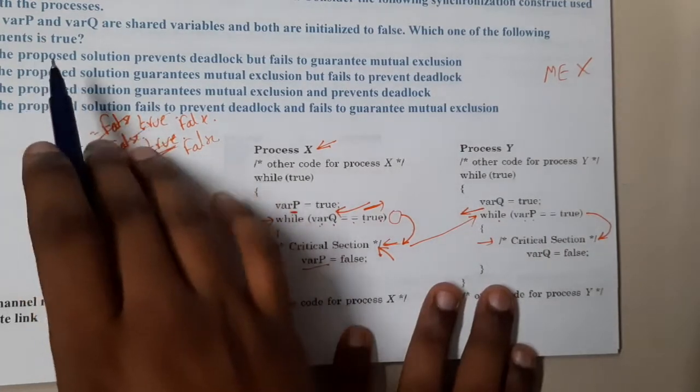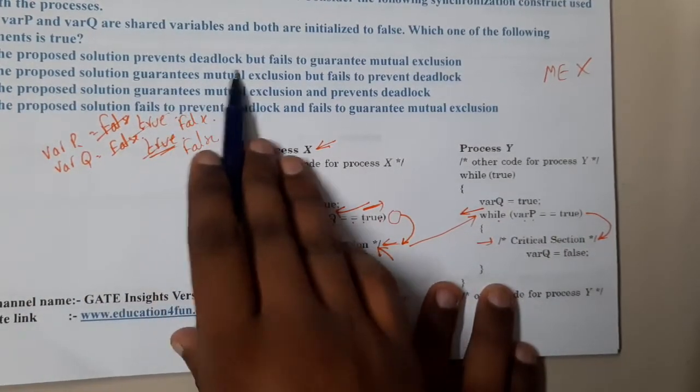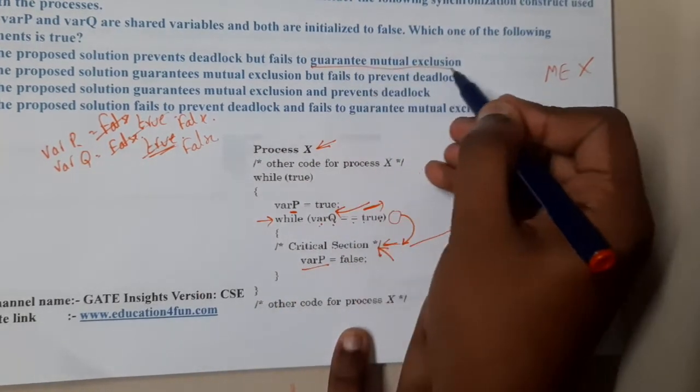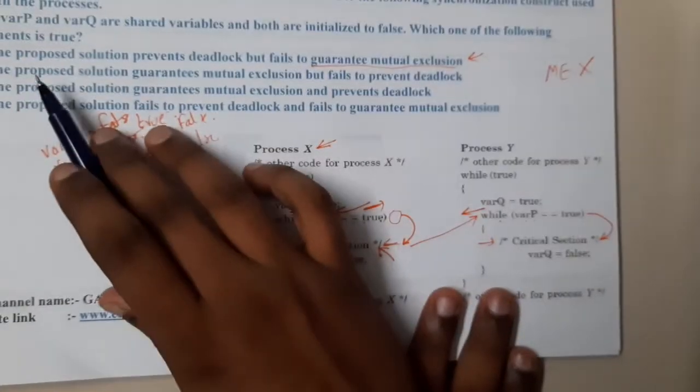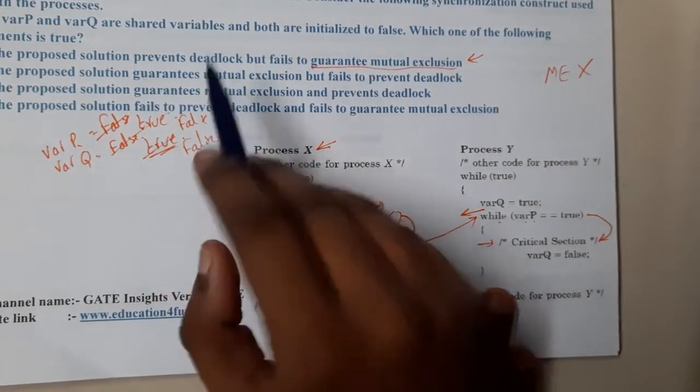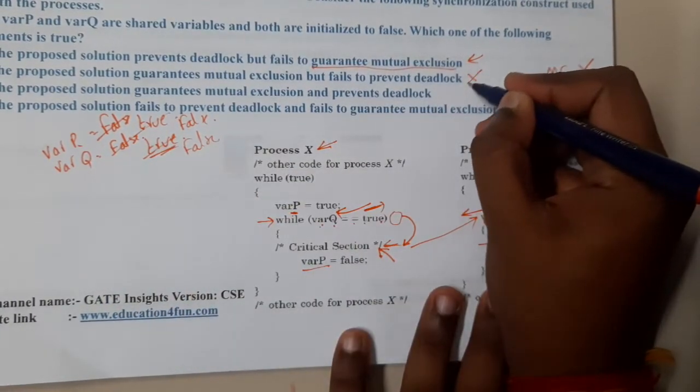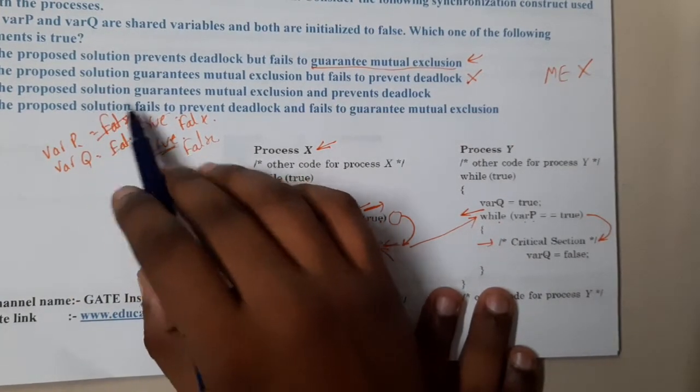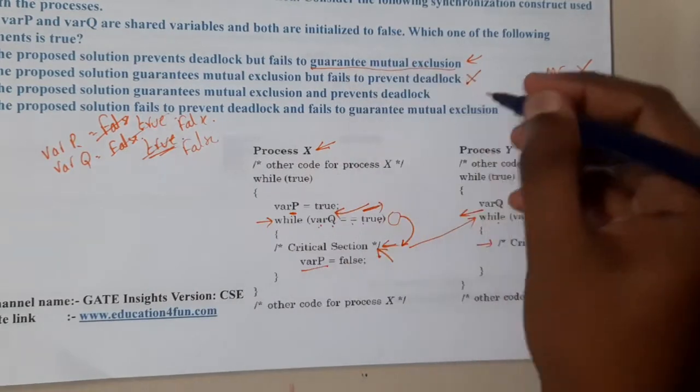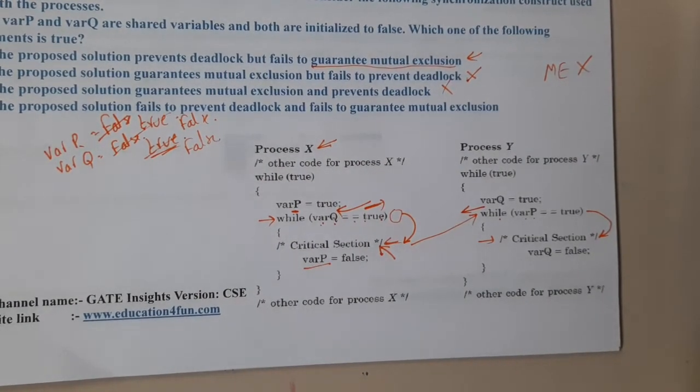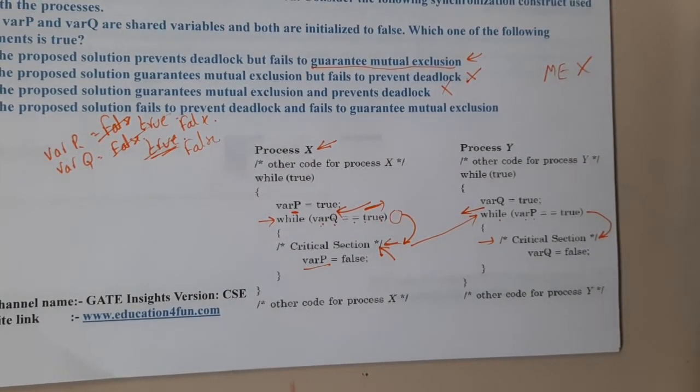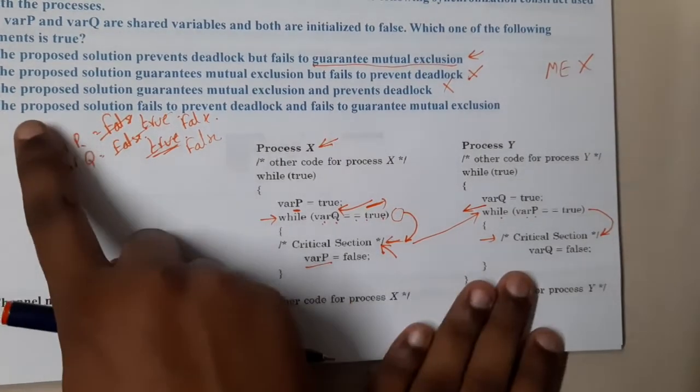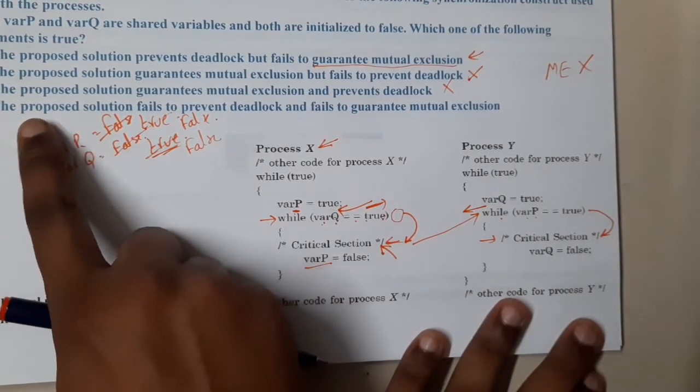Option A says that the proposed solution prevents deadlock but fails to guarantee mutual exclusion - this is okay for me for now. Option B says that the proposed solution guarantees mutual exclusion - oh my god, no, I'm not happy with it. Similarly, option C says the proposed solution guarantees mutual exclusion - this is also not satisfied. Both of these options are completely wrong because we are 100% clear that mutual exclusion is not possible.